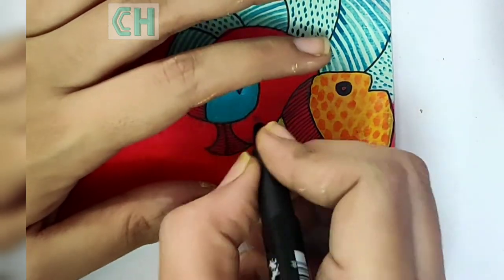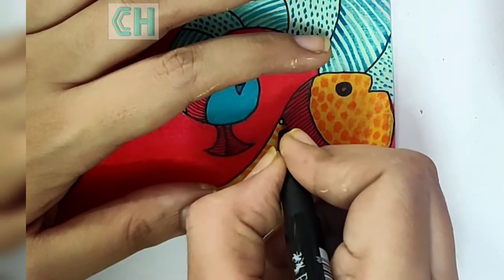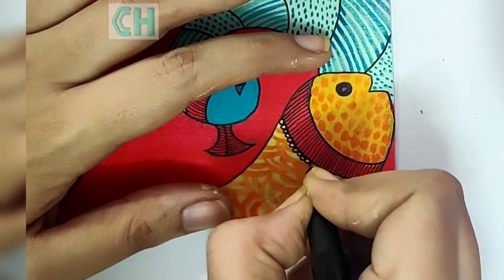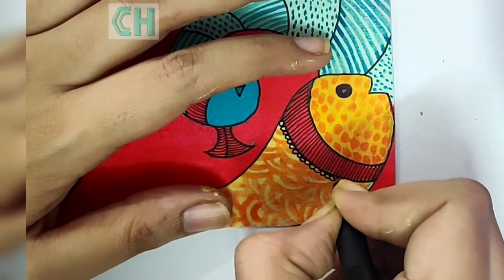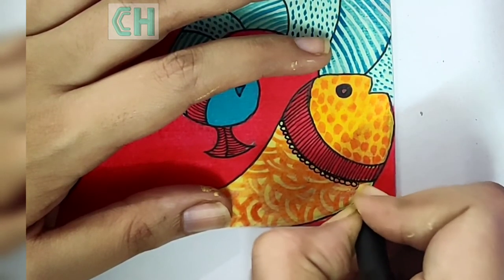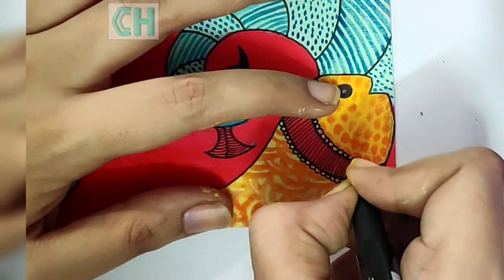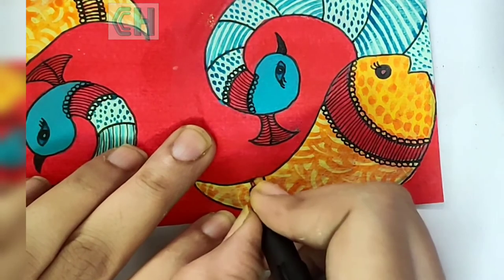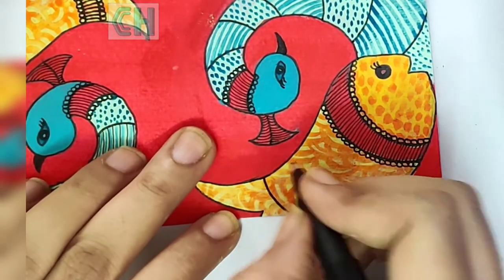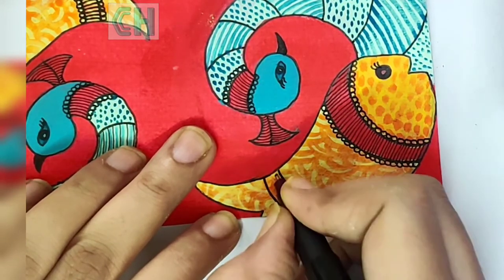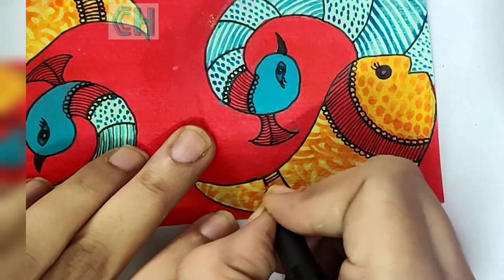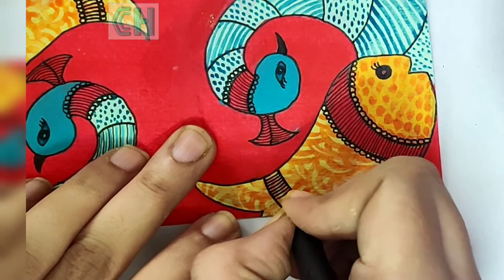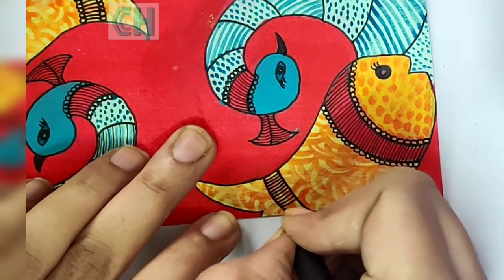I again took the fine marker and added few more designs by just making these small circles on both sides of the collar of the fish and the peacock as well. The tail of the fish made this band again and also added few strokes of parallel lines like this and gave fine circle borders on both the sides.